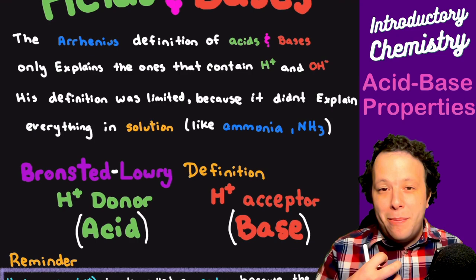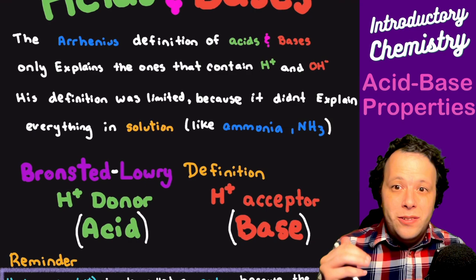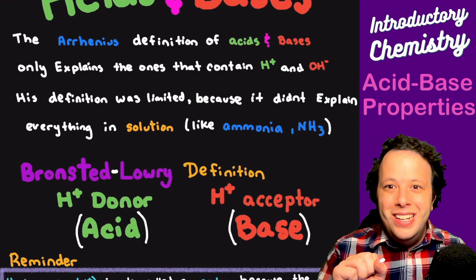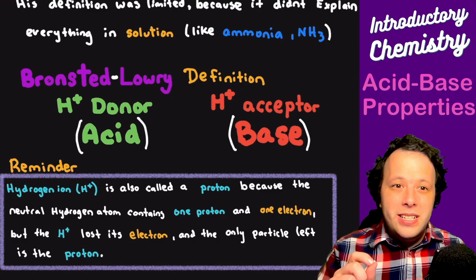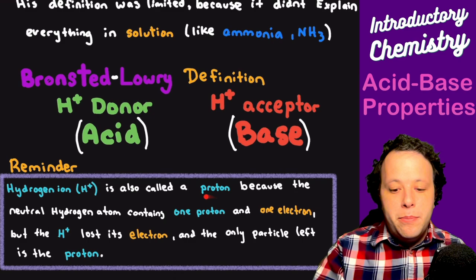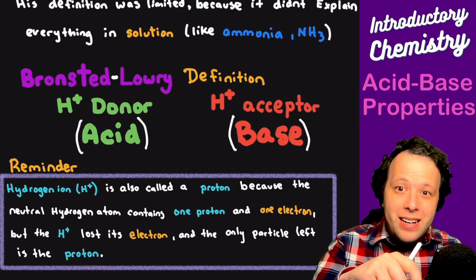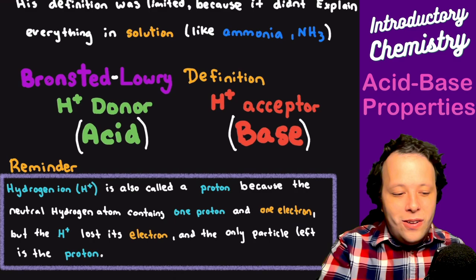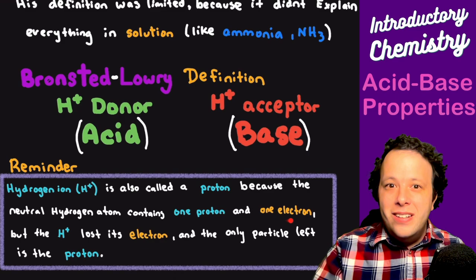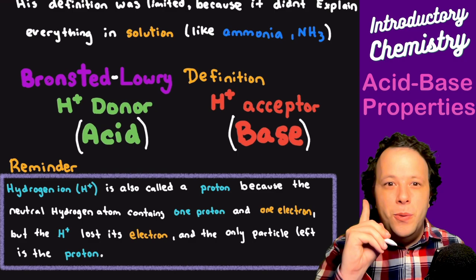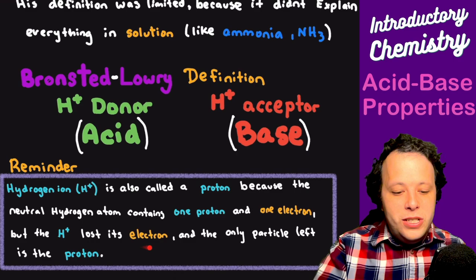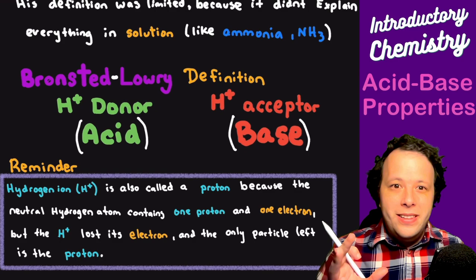Whenever we have an acid, it leads with H+ and it's trying to give that proton away. What is H+? We call it a proton. If you think back to basic chemistry: a neutral hydrogen atom contains one proton and one electron — it's spot number one on the periodic table, meaning one proton, one electron. However, H+ means it loses that one electron. So what is left is that one single proton, and that's why we call H+ a proton.